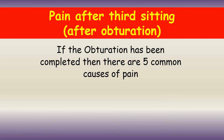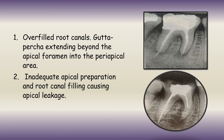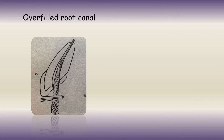If the patient reports with pain after the RCT has been completed, there can be five common causes of pain. The first possible cause is overfilled root canals — this happens when the gutta percha extends beyond the apical foramen into the periapex, causing irritation resulting in pain. Overfilled root canals occur when during root canal preparation the apical one-third area was over-prepared, and also when during master gutta percha cone selection apical tuck back was not present, therefore the gutta percha tends to get pushed into the periapex during obturation.